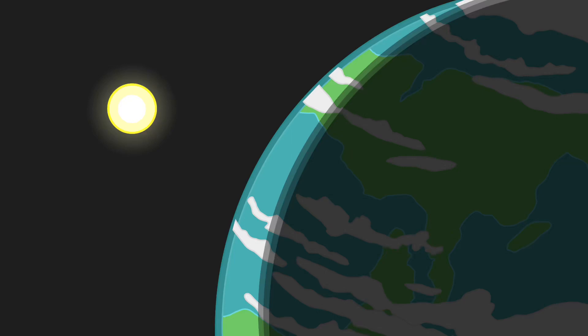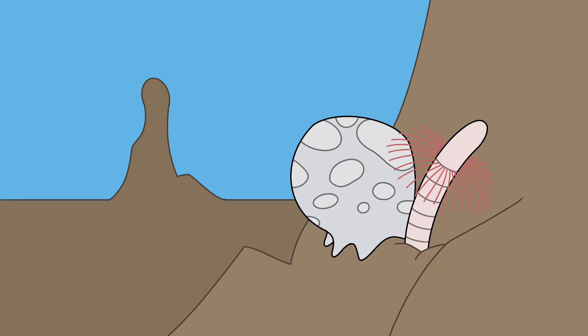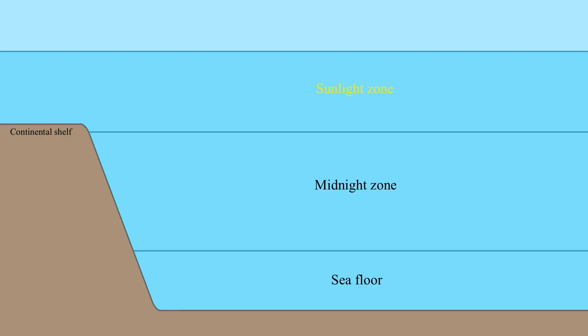Hello everyone and welcome to the fourth episode of the CER-KET project. This project will show the history of the fictional exoplanet CER-KET. In this episode we will cover the open ocean and the deep sea. We will cover the ocean starting with the surface and work our way down to the deepest parts of the ocean.